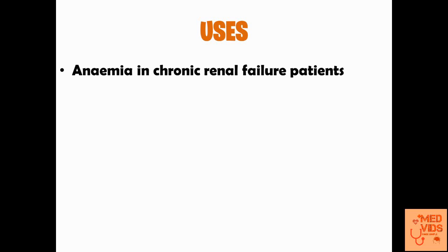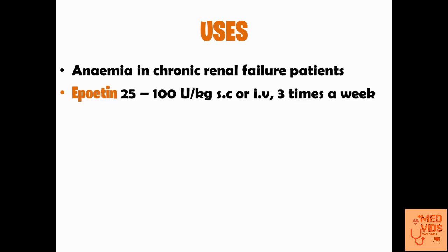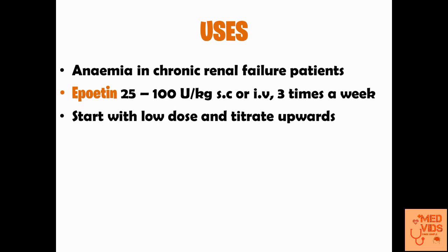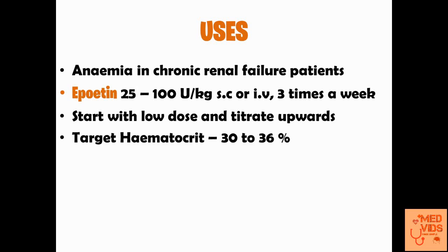Erythropoietin must be administered first to correct anemia, but if iron deficiency is also suspected, iron formulations can be administered along with erythropoietin. The dosage of epoietin is about 25 to 100 units per kg of body weight, subcutaneously or intravenously, three times a week. We should start with a low dose and increase it slowly, because sudden high doses cause very adverse effects. The target hematocrit value is about 30 to 36 percent and target hemoglobin level is about 10 to 11 grams per deciliter.